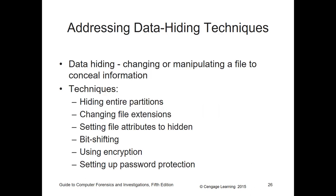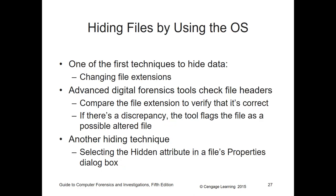Let's talk about hidden data. Data hiding changes or manipulates a file to conceal data or information. Techniques can include hiding entire partitions, changing file extensions, setting hidden file attributes, bit shifting, encryption, password protection, and steganography — depending on what you're trying to hide and how. One of the first and most common techniques is changing the file extension to hide data. If you're looking for a JPEG and it's been changed to PDF, that file won't be identified as a JPEG anymore — it'll be labeled as a PDF even though in reality it's not, and you can manually manipulate it based on whatever criteria you have.